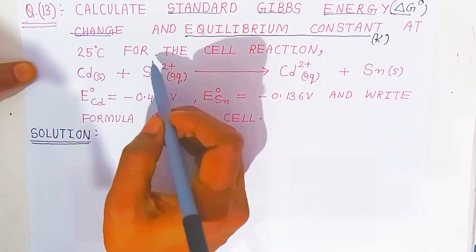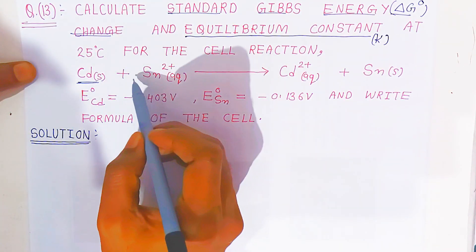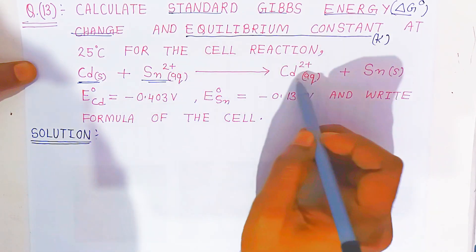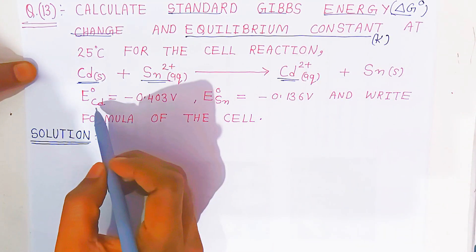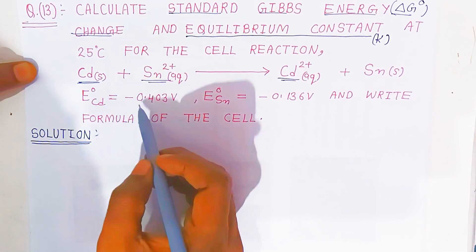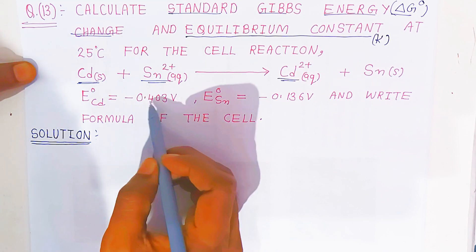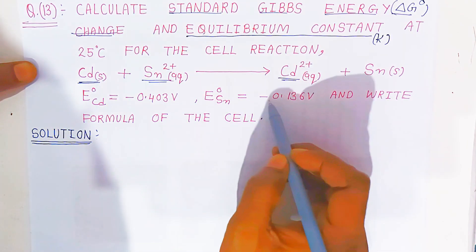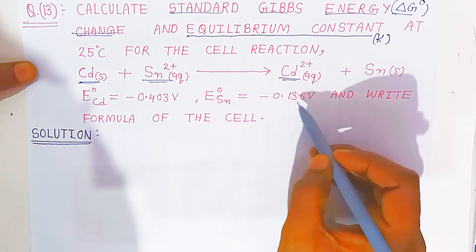The cell reaction is: cadmium solid reacts with stannous 2-plus aqueous, giving cadmium 2-plus aqueous and stannous solid. The standard electrode potential of cadmium is given as minus 0.403 volt, and the standard stannous potential is given as minus 0.136 volt.